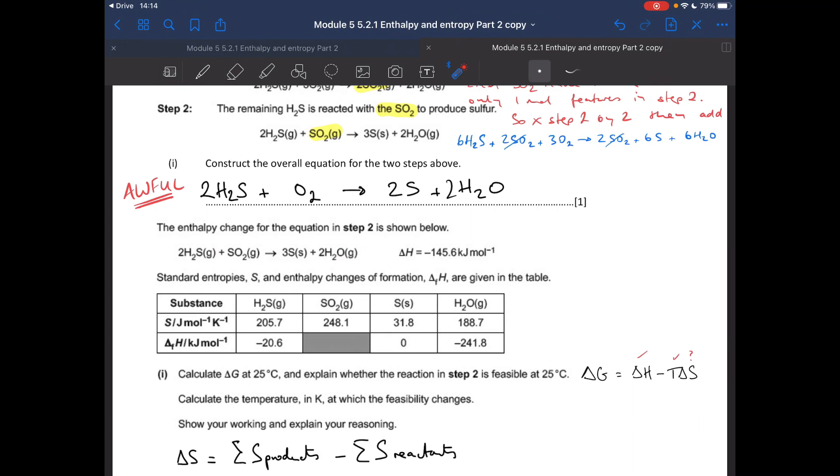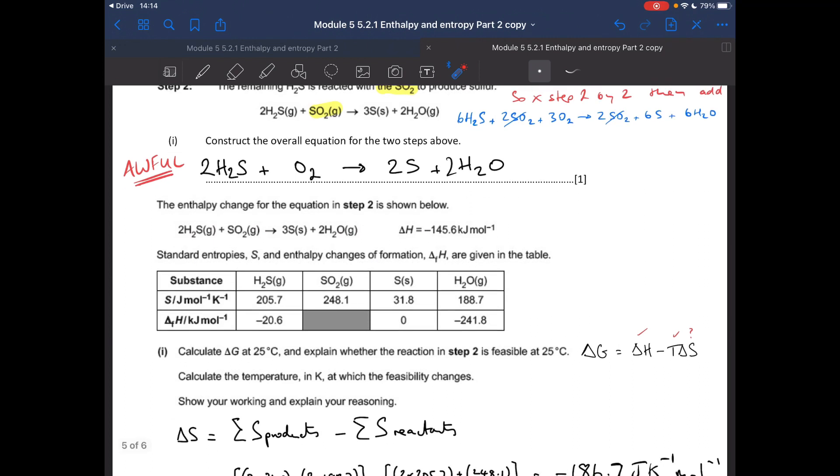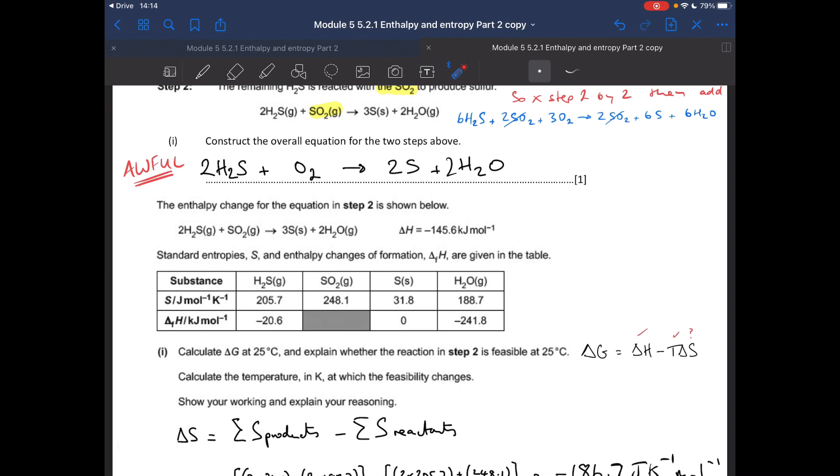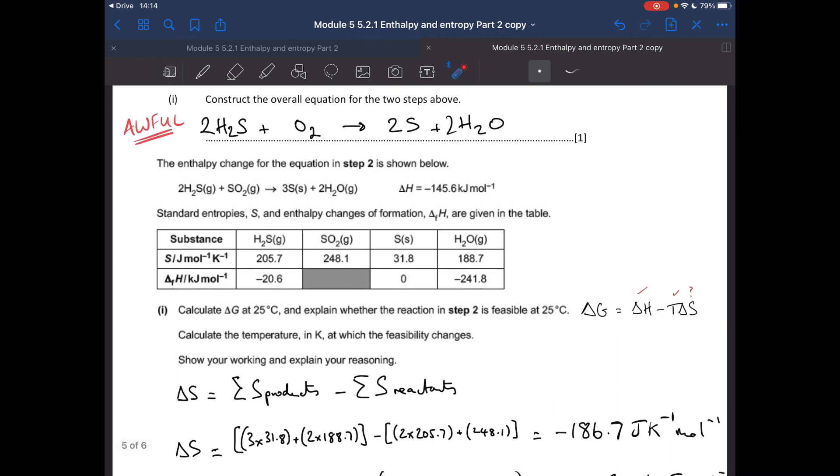So delta S is the sum of the entropies of the products minus the reactants. I'll just remember it as spa, like the shop. So that gives you a delta S value of minus 186.7 joules per kelvin per mole.